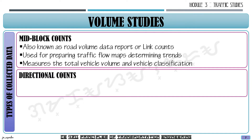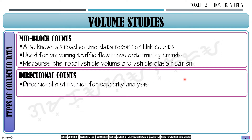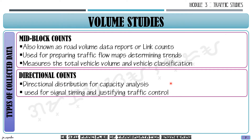Another type is directional counts, used for directional distribution for capacity analysis. We can identify how many vehicles turn right, turn left, or go straight at an intersection or road section. This is used for signal timing and justifying traffic controls.